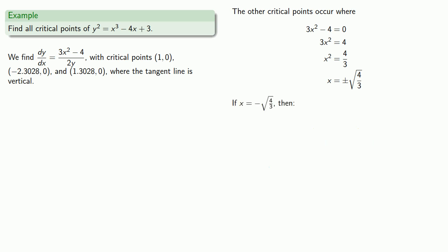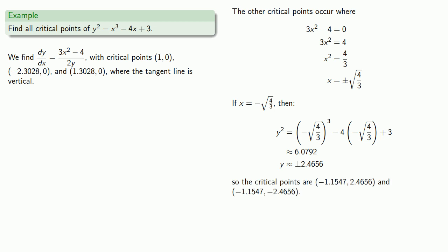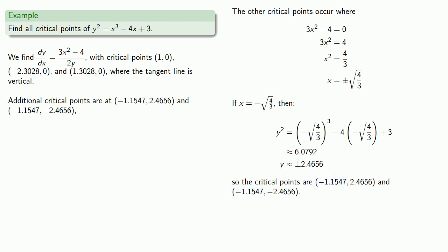What about x equals negative square root of 4 thirds? Substituting this x value into our equation, we find our y value. It's important to notice that there are two possible y values for this one x value, giving us two additional critical points. As a note on mathematical style, since our y value is in decimal form, we should give our x value in decimal form as well, converting negative square root of 4 thirds to its decimal equivalent.